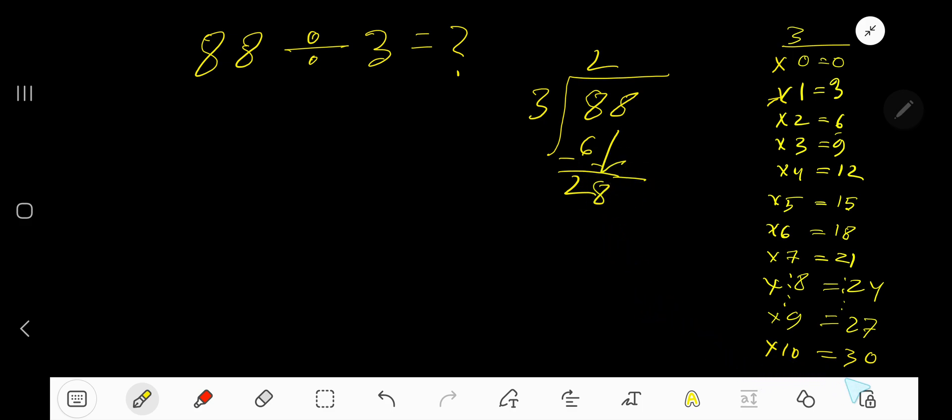3 goes into 28 how many times? 10 times gives 30 which is greater, so 9 times. 9 times 3 is 27. Subtract and you are getting 1.